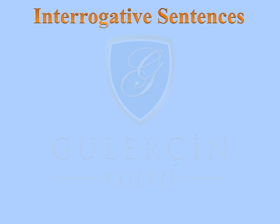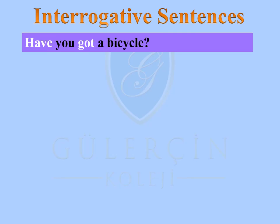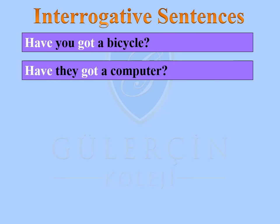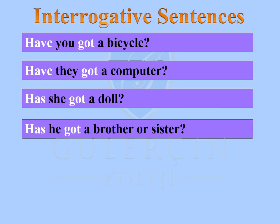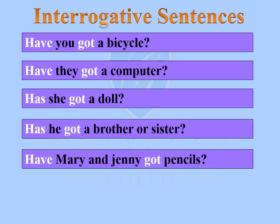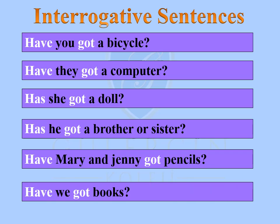Interrogative sentences: Have you got a bicycle? Have they got a computer? Has she got a doll? Has he got a brother or sister? Have Mary and Jenny got pencils? Have we got books?